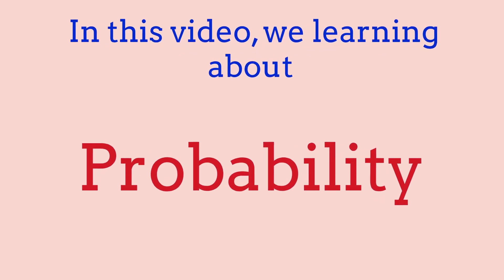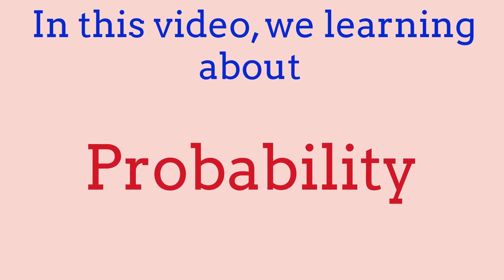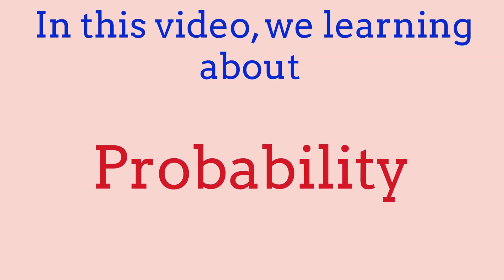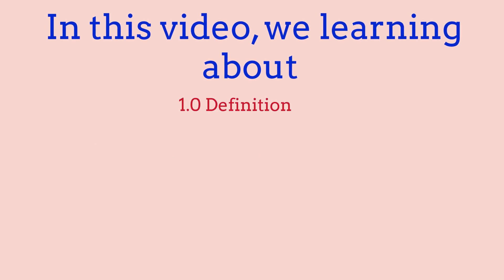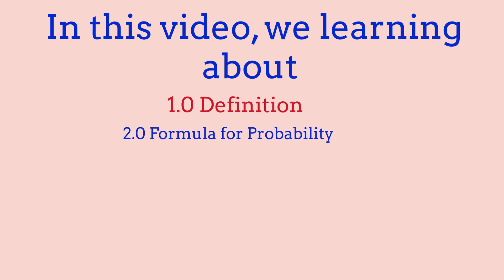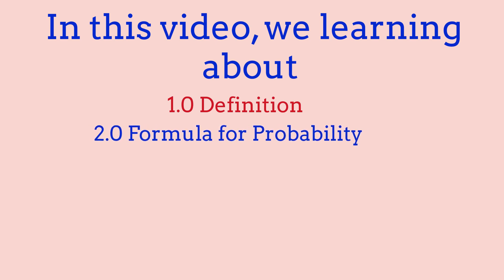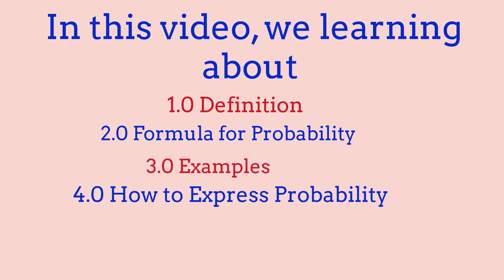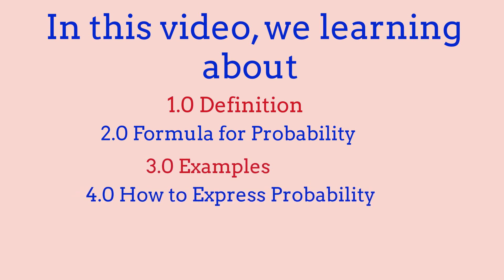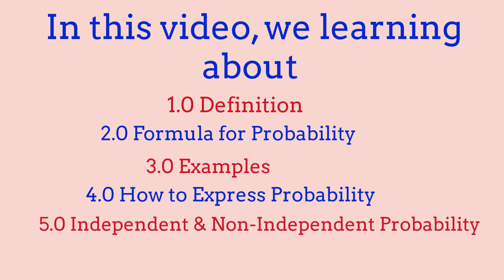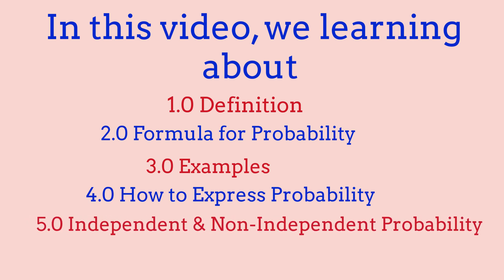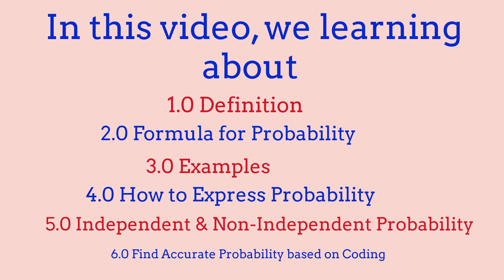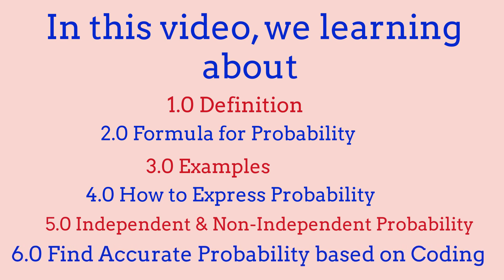In this video we're going to be learning about probability. Throughout this video we're going to be covering the following topics: first, the definition of probability; second, the formula of probability; third, some examples of probability; fourth, different ways to express probability; fifth, independent versus non-independent events in probability; and sixth, how to get accurate probability values with coding.